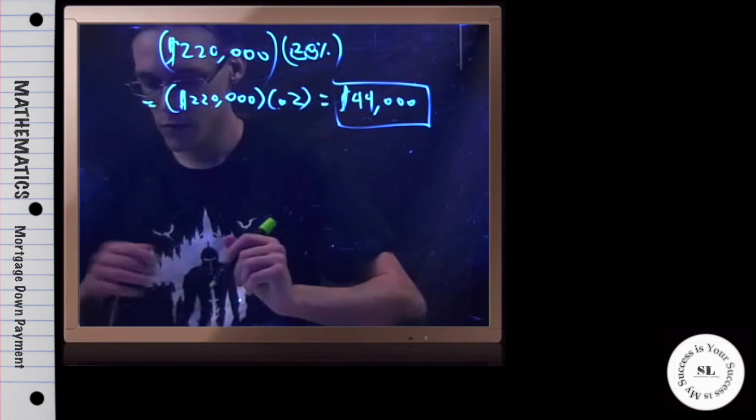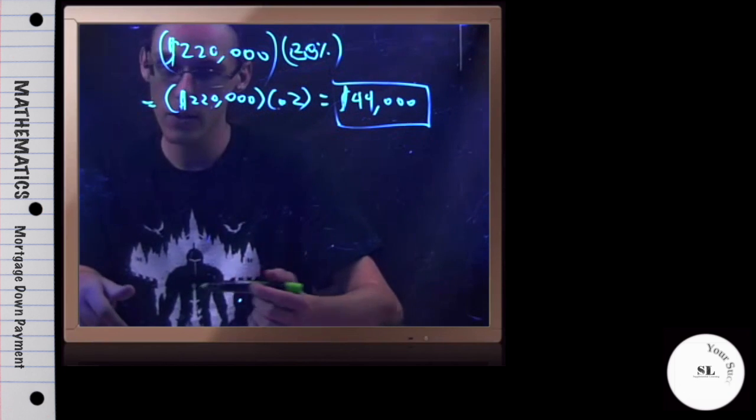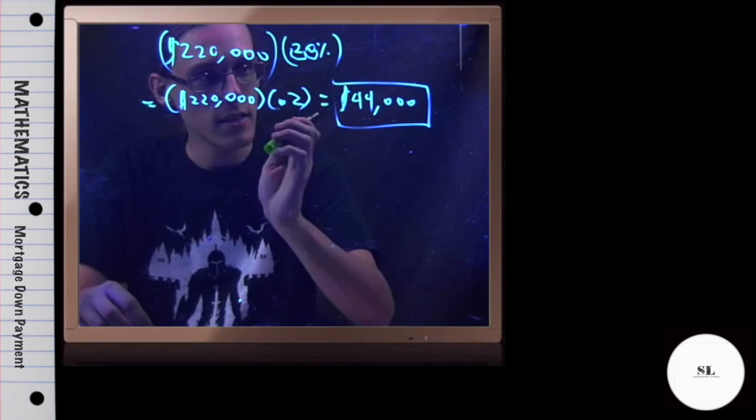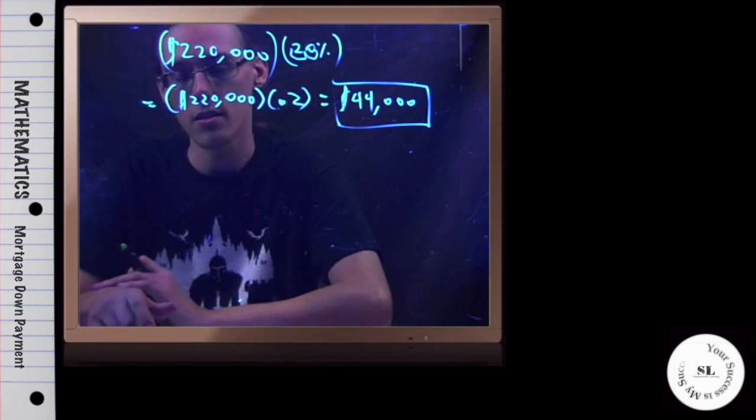So they gave us a lot of information, but all they asked was to find the required down payment. So it's the cost of the home times the down payment percentage. And in this case, it came out to be $44,000. And that is this example.